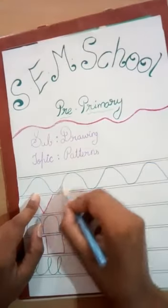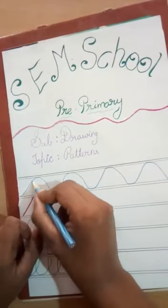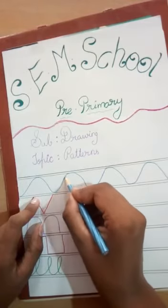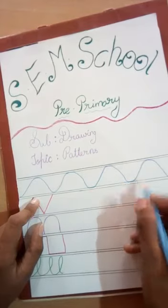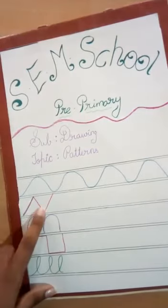I hope you have got this. It is a wave pattern like this. Again I will show you: go to the upper side and downside, again up, down, up, down, up, down. This is called the wave pattern. And in the second, we are going to draw a triangle pattern.